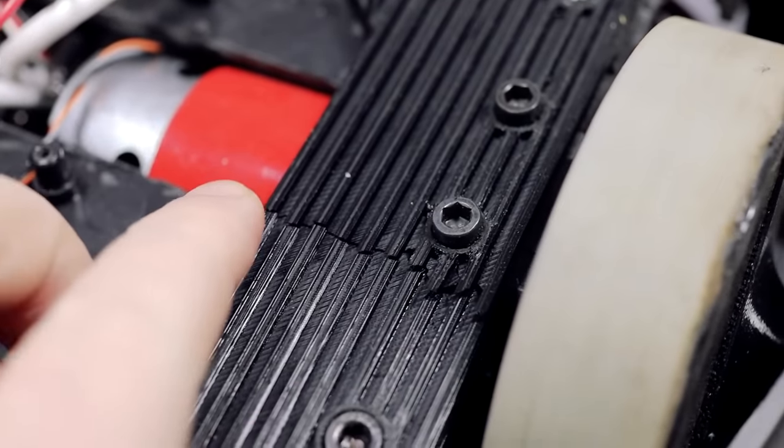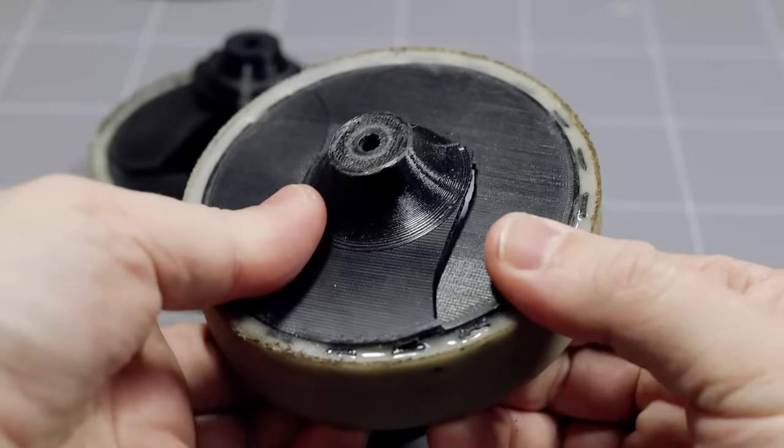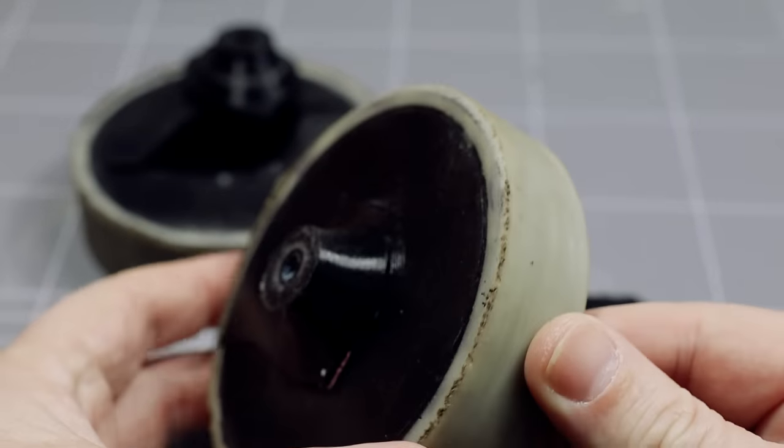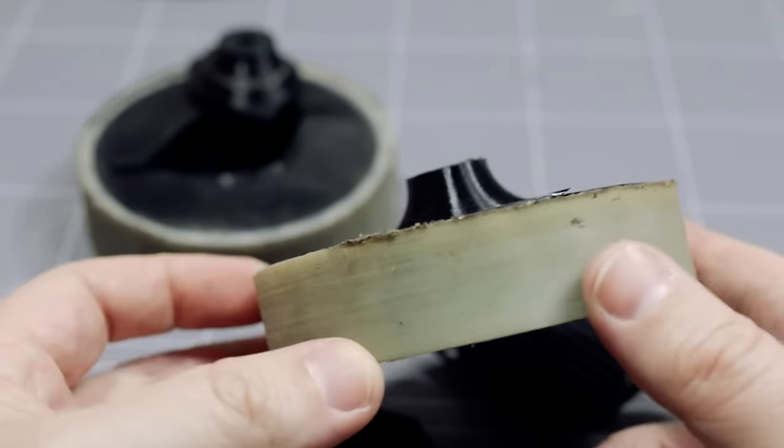One broken gearbox mount and two broken wheels. The urethane tires are extremely strong though. Here you can see the impact that broke the gearbox mount and a wheel and then the lateral force that probably broke the other wheel.